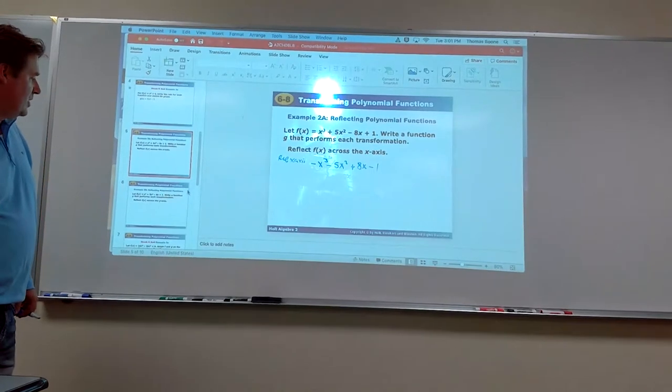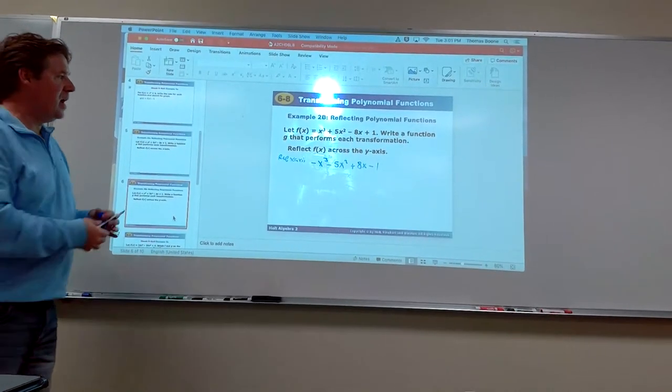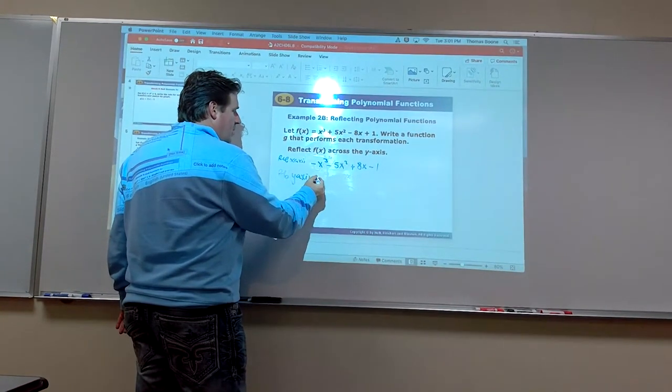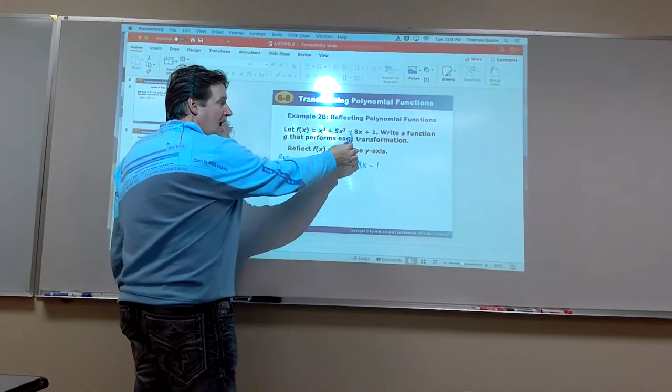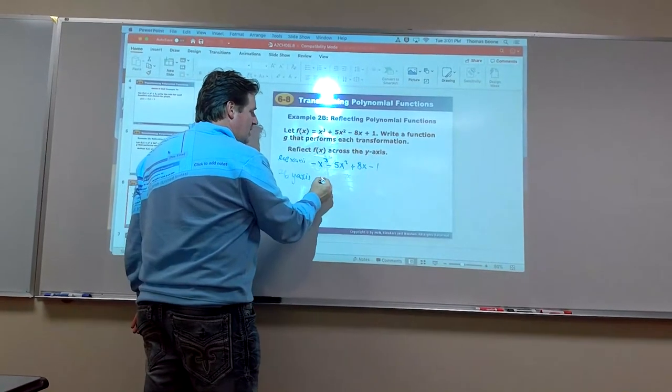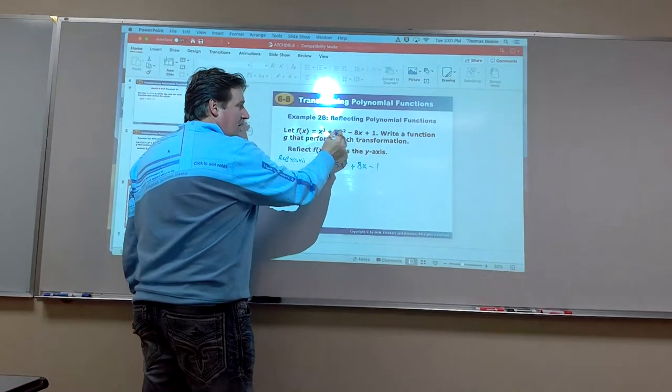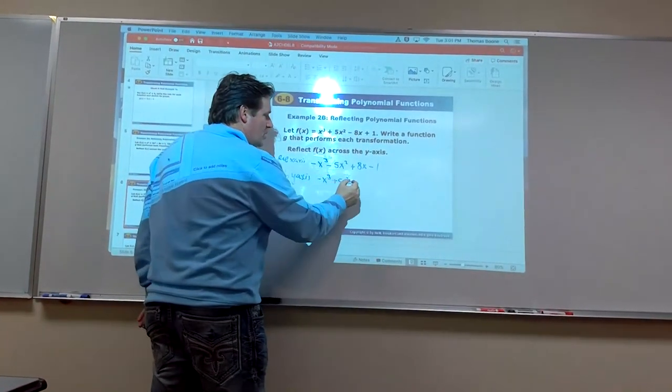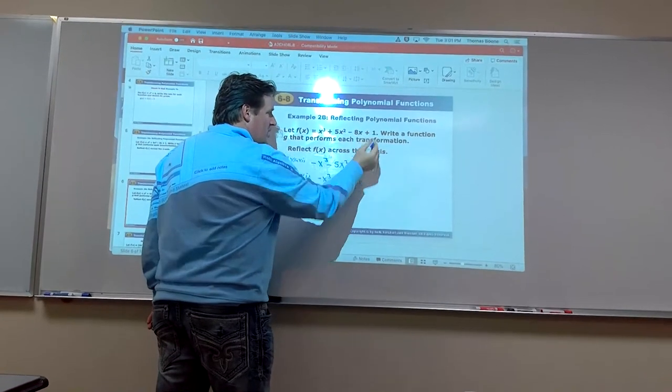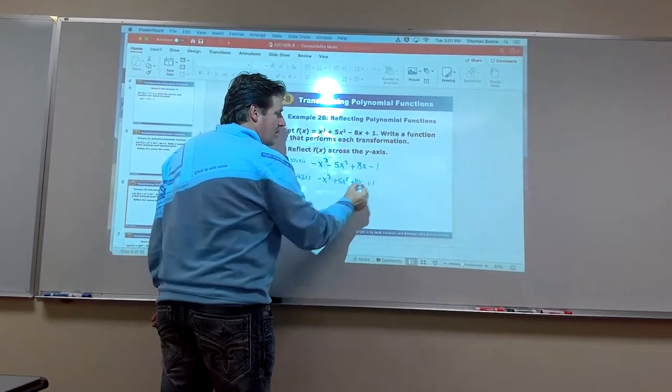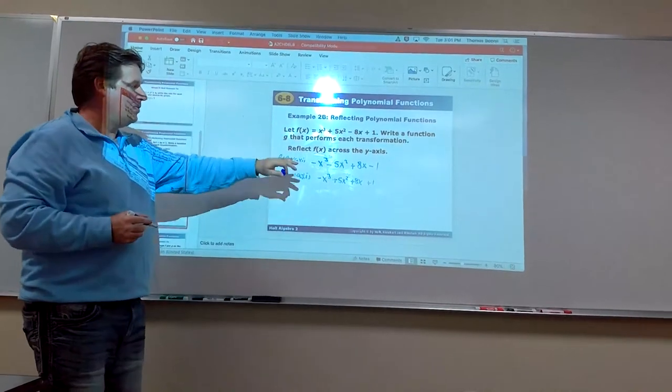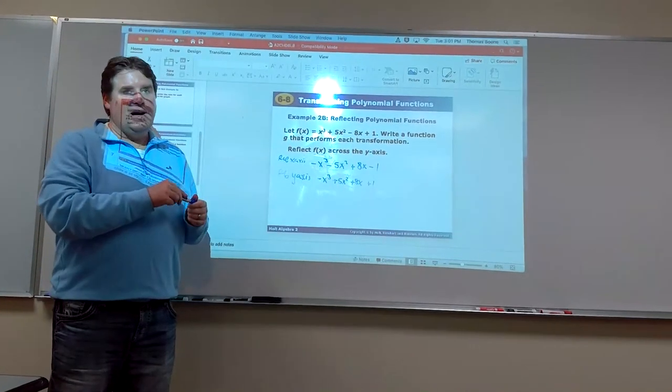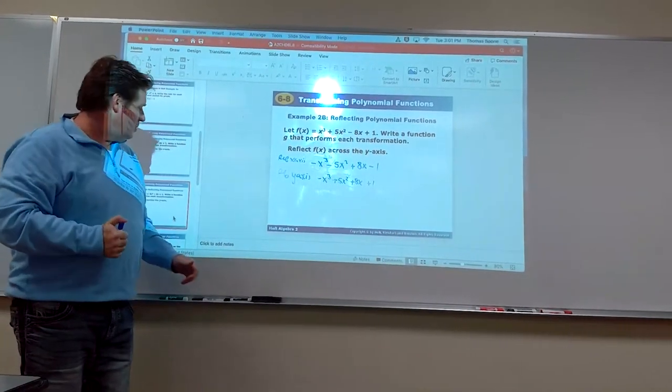Now for the same function reflected across the y-axis. We just change the odd-degree terms. So x³ becomes negative x³, the x² stays the same, the x term becomes +8x, and the constant stays the same. Notice the difference: when you reflect across the x-axis, change all terms; for the y-axis, it's just the odd-degree terms.